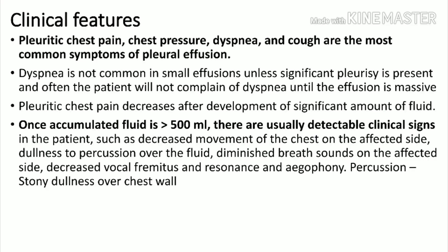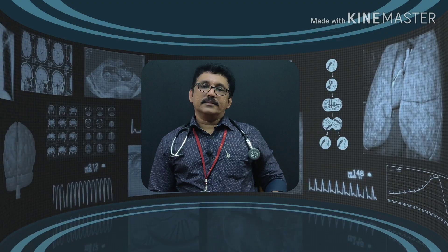If there is an infective pleural effusion, initially there may be pleuritis producing pleuritic chest pain — one-sided chest pain that increases on deep inspiration. When the fluid increases, the pain disappears. The patient will then have chest tightness, chest pressure, difficulty in breathing, and cough as common findings.